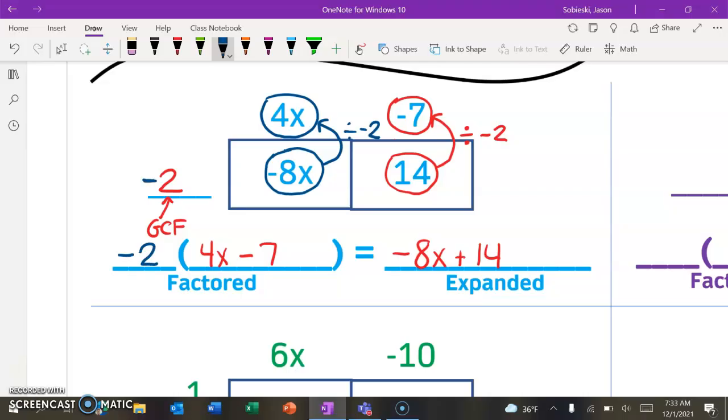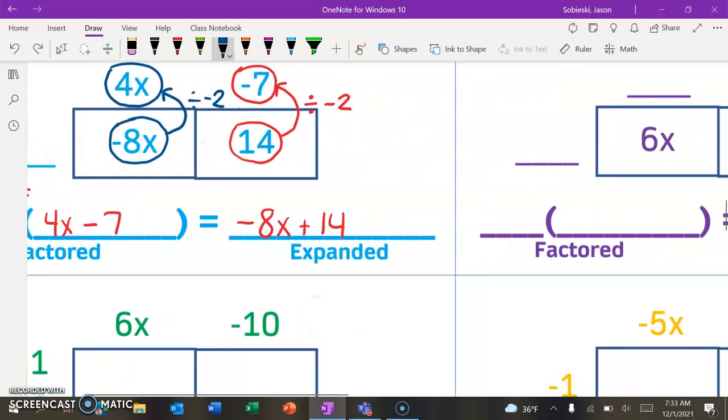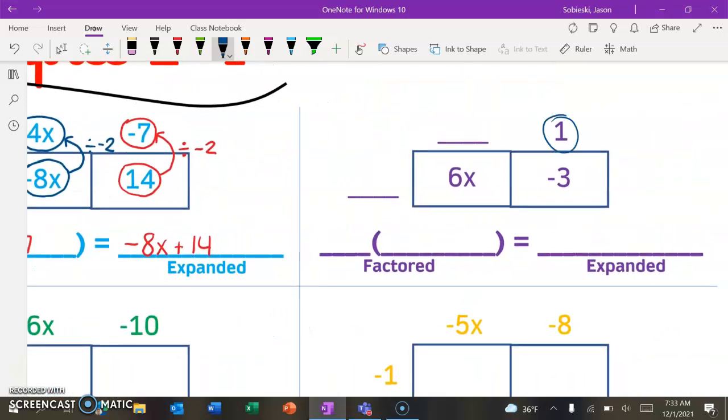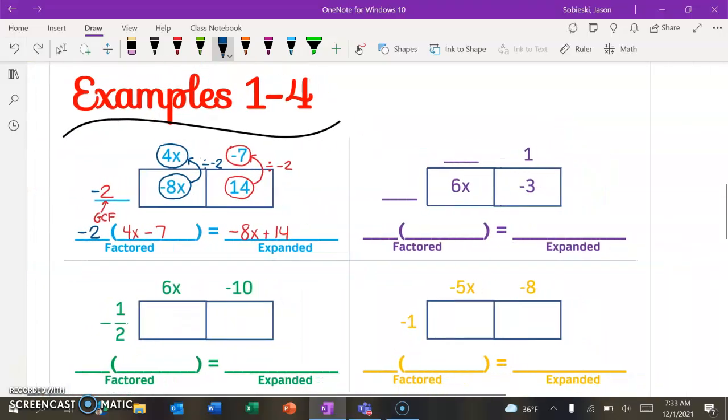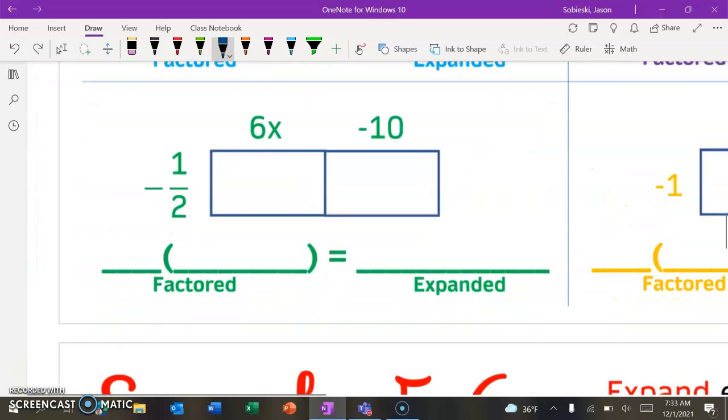So our GCF in this problem is actually going to be a negative 2. So that's what's going to come out in the front of our parentheses for our factored form. So that one is good. Again, we could find this GCF on our own, but if they fill in part of the rectangle for you, like the top part, use that to help you. So when you, on your own, take a look at the purple example, use the fact that you have a 1 here to figure out what your GCF is going to be. Okay, so we're going to leave that purple example for you to try.